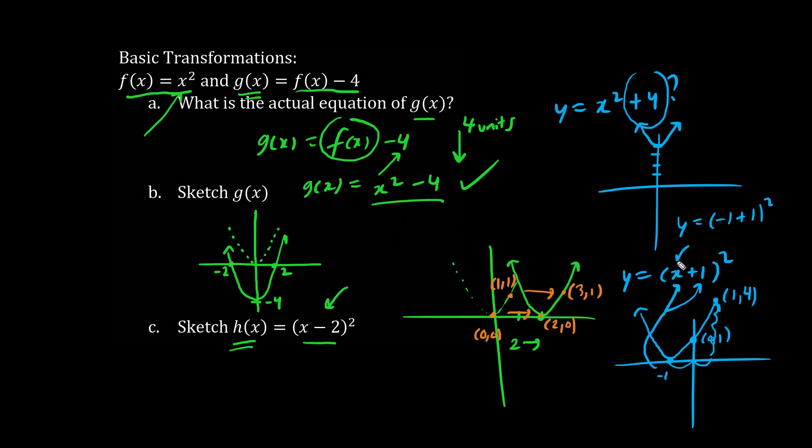When x = 1, y = (1 + 1)², which is 2², which is also 4. So this appears to be correct.